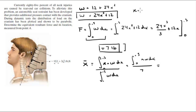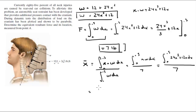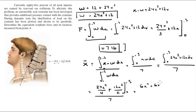x times w equals 24x cubed plus 12x, so this is the integral from 0 to 0.5 of (24x cubed + 12x) dx, all over 7. This comes out to 24x to the 4th over 4 plus 12x squared over 2, all over 7, evaluated from 0 to 0.5 — which simplifies to (6x⁴ + 6x²) from 0 to 0.5, all over 7. Plugging in the numbers gives x-bar equal to 0.268 feet.